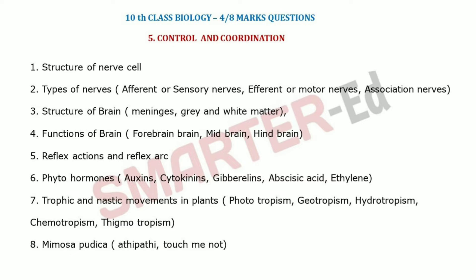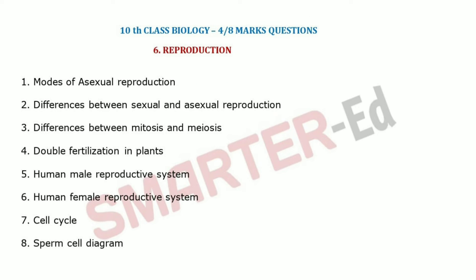Next is reflex action and reflex arc, followed by phytohormones — which are plant hormones. Then tropic and nastic movements in plants: phototropism, geotropism, hydrotropism, chemotropism, and thigmotropism. These are very important for four and eight marks. Mimosa pudica, the touch-me-not plant, is also important.